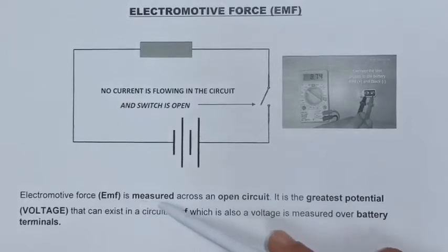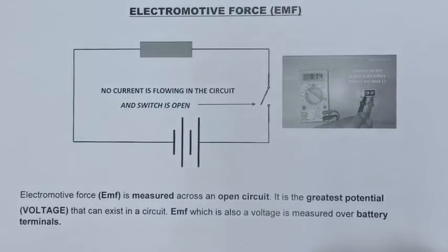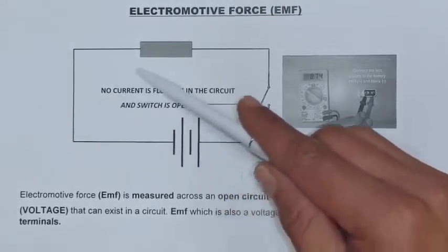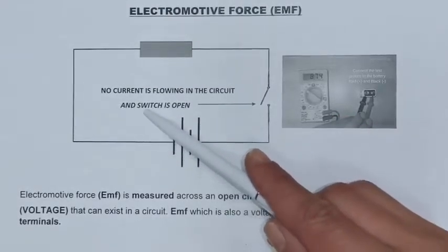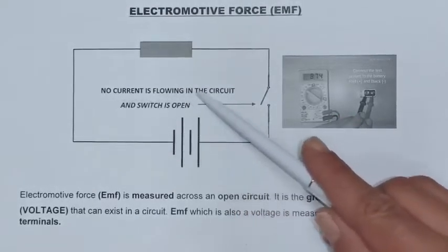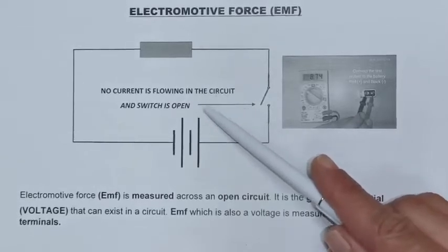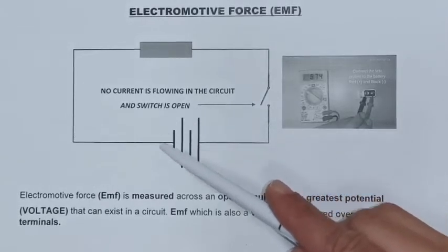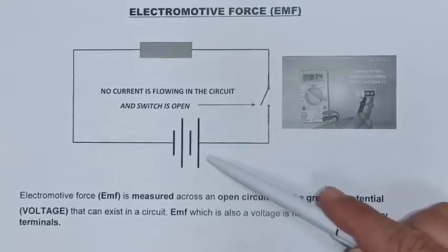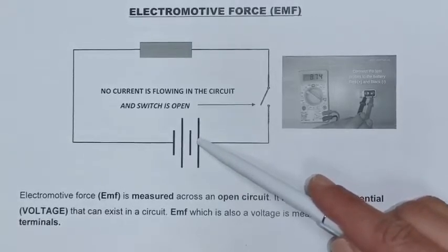EMF is measured across an open circuit and it is the greatest potential that can exist inside a circuit. So if we have a look at this circuit which we have here, you can see that my switch is open and I have no current flowing in the circuit. The reason for that is I want to measure what is my EMF across my battery.